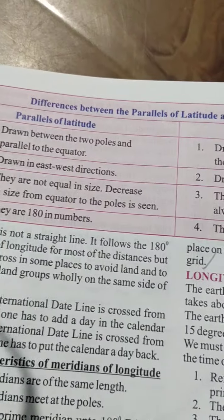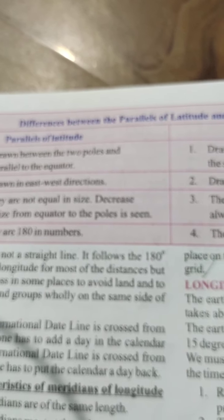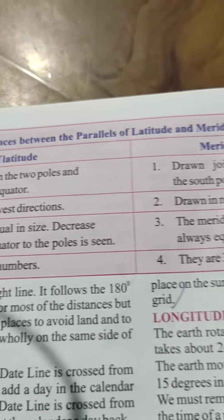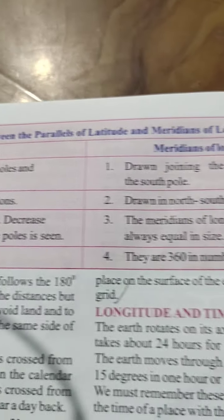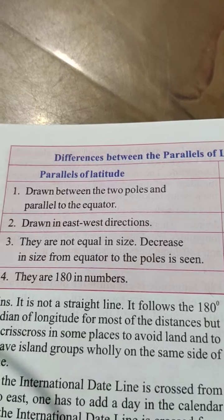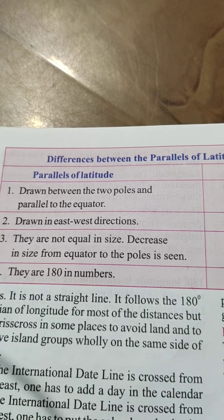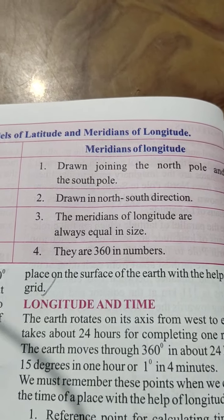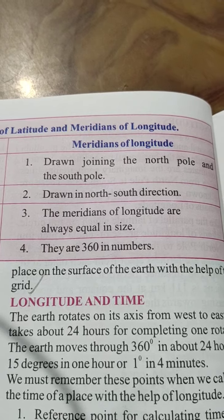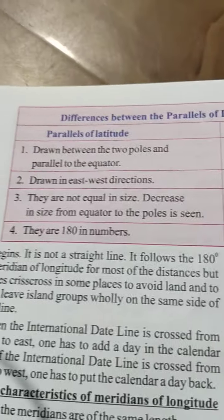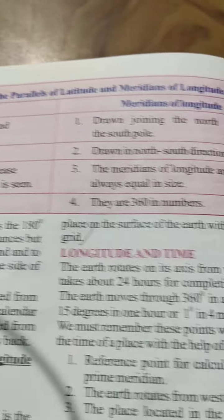Differences between the parallels of latitudes and meridians of longitudes. Point 1: Parallels of latitude are drawn between the two poles and parallel to the equator, whereas meridians of longitude are drawn joining the north pole and the south pole. Point 2: Parallels of latitude are drawn in east-west directions, whereas meridians of longitude are drawn in north-south directions.